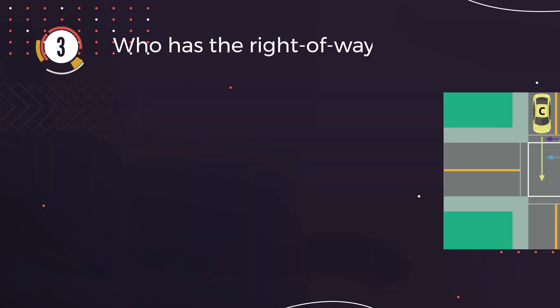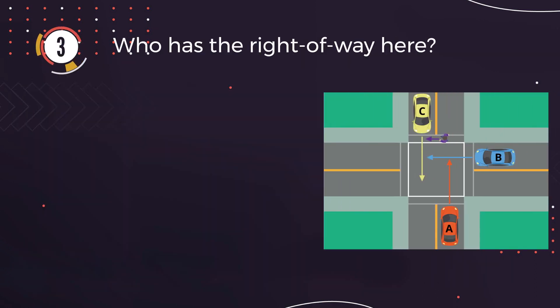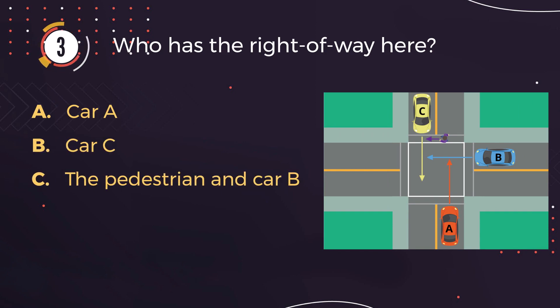Number 3. Who has the right of way here? A: Car A. B: Car C. C: The pedestrian and car B. D: None of the above.